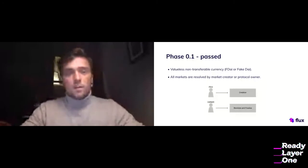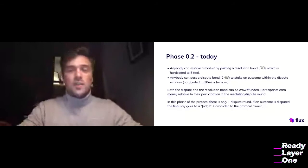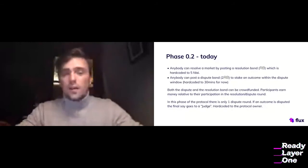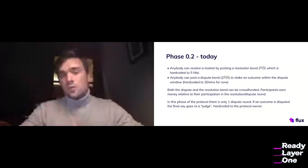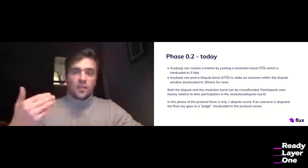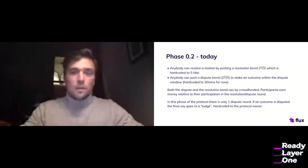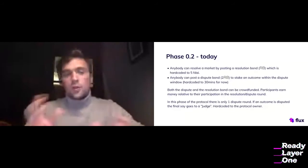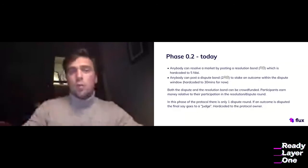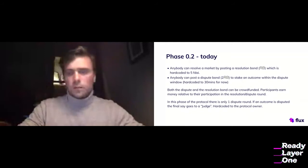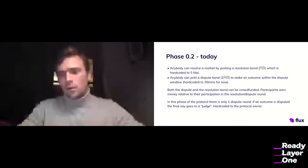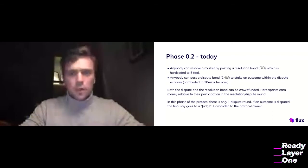Phase 0.2 is where we are today. We changed it so that anybody can actually resolve a market now by posting a resolution bond, which is hardcoded to 5 FDAI. Anybody can post a dispute bond to stake on an outcome within the dispute window — within 30 minutes after the initial resolution is provided, anybody can dispute it by doubling the stake of the resolution bond. Both the dispute and the resolution bond can be crowdfunded, which is an important side note. Participants earn money relative to the amount of participation or stake in their dispute rounds.